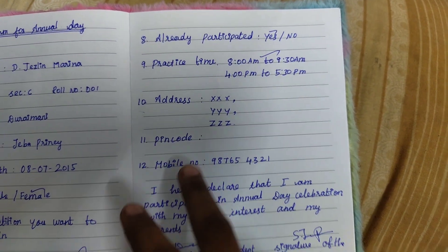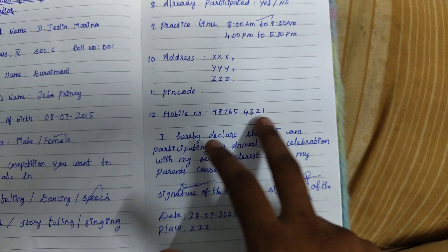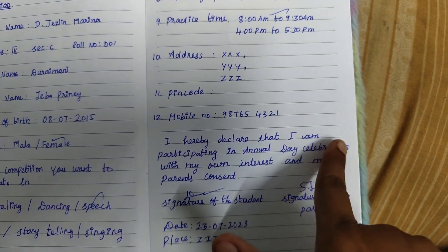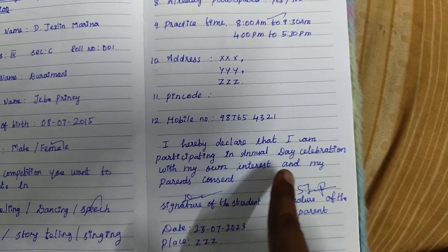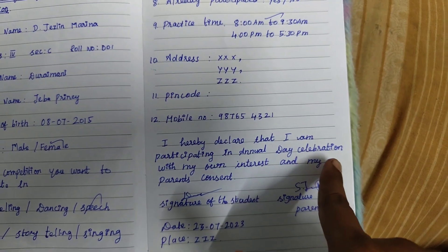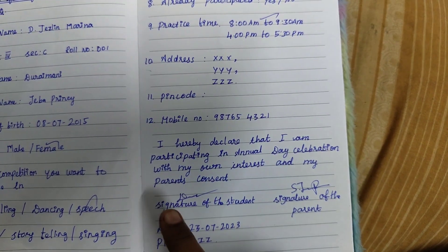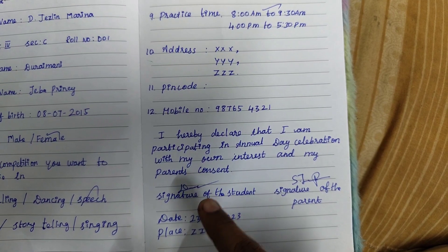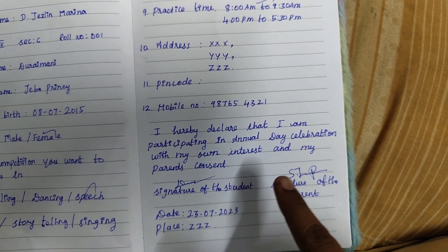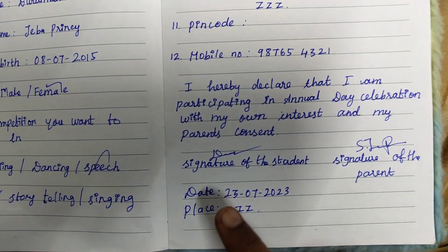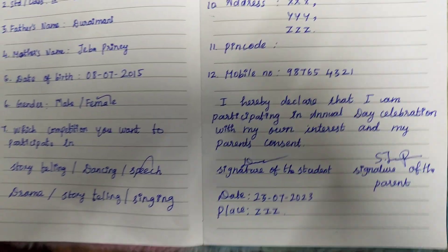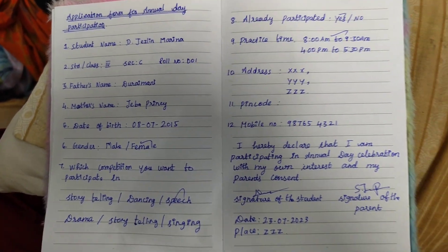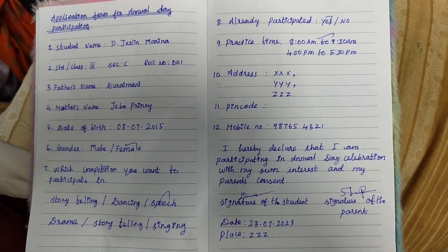Then you have to write your address and pin code, and enter your mobile number. Then there is the declaration for the participation of annual day celebration. You have to sign the signature of the student, and also get it signed by your parent. Then write the date and place. Okay friends, thank you, bye!